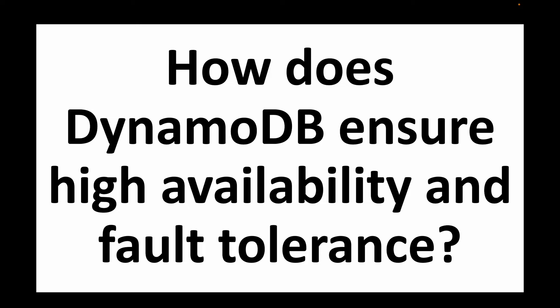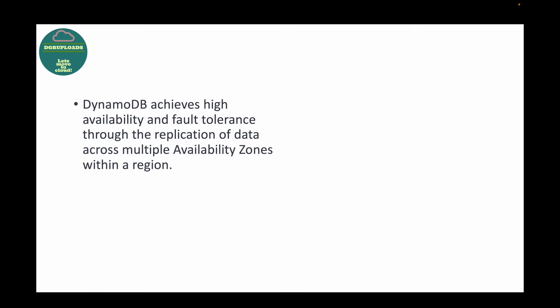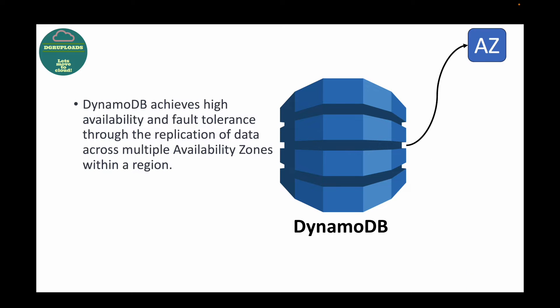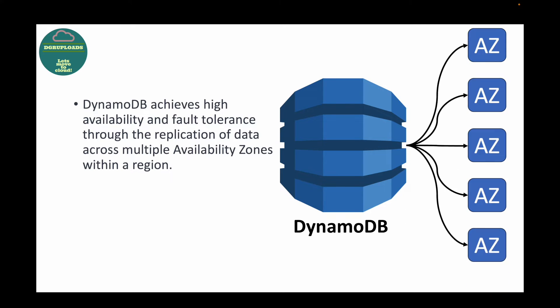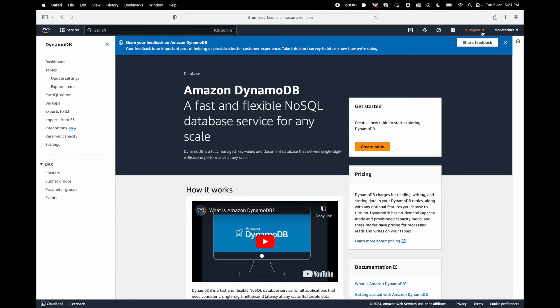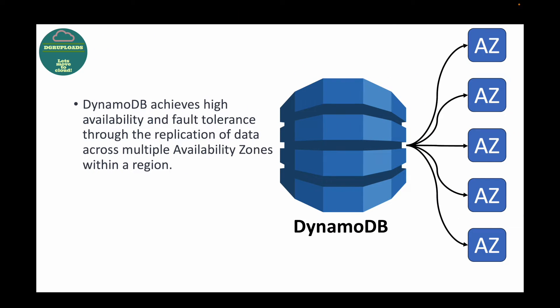The next question is: how does DynamoDB ensure high availability and fault tolerance of your data? DynamoDB achieves this by replicating your data across multiple availability zones within a single region. For example, in North Virginia we have six availability zones, and AWS will automatically replicate whatever data you store in DynamoDB across all those availability zones.